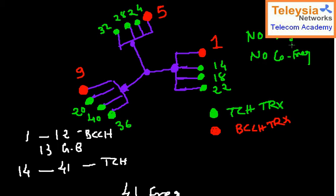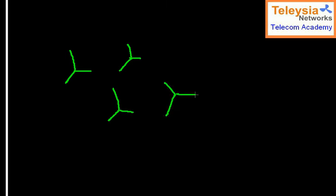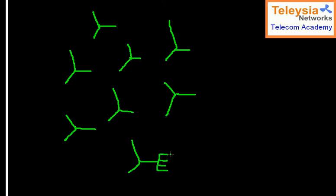It seems easy with one cell site and enough frequencies, but real network planning is much more complex. In a real network, you have many cell sites nearby — maybe one kilometer apart or less. Each cell has four TRX: three are TCH and one is BCCH. So every site has 12 TRX total, meaning every direction has four TRX.